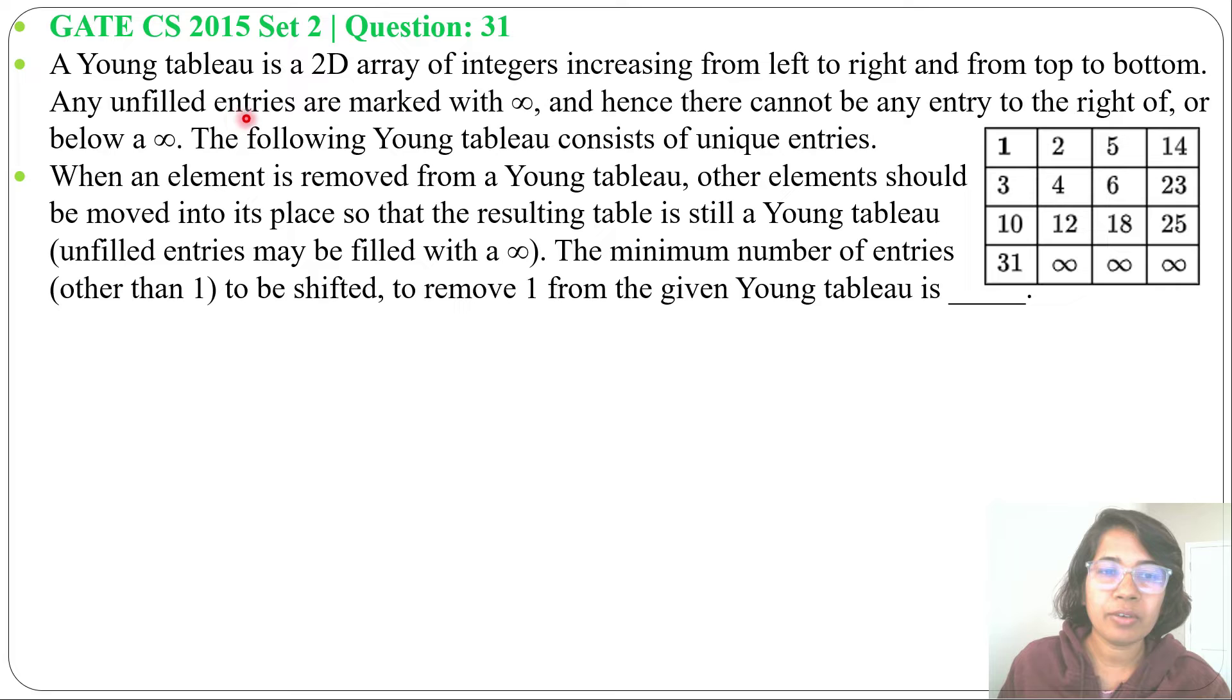Any unfilled entries are marked with infinity, and hence there cannot be any entry to the right of or below infinity. The following Young tableau consists of unique entries. When an element is removed from a Young tableau, other elements should be moved into its place.